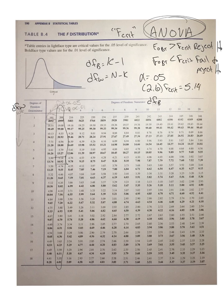So my critical value would be 5.14. If my F obtained falls in that critical region, I can reject the null hypothesis. Now, if I had set alpha at 0.01, see how it jumps much higher to 10.92 — that's a really tight critical region to try to hit.